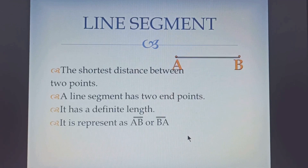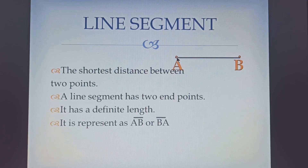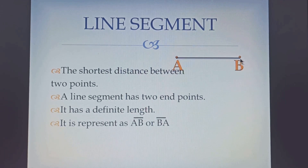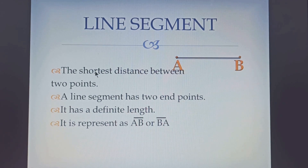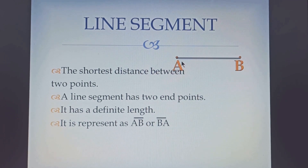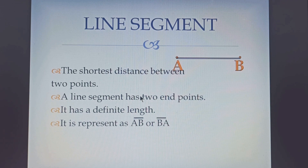Now let us learn about line segment. When we have two points, we can join these two points in many different ways. Like from point A to point B I can go in a curved way, or I can go straight. If I go straight from point A to point B, that will be the shortest distance. This shortest distance between two points, that is point A and B, is the line segment. A line segment has two end points, and as it has end points, we can measure its length using a ruler, so it has a definite or fixed length.